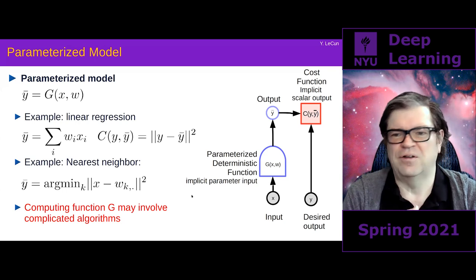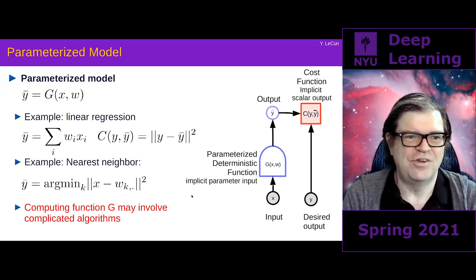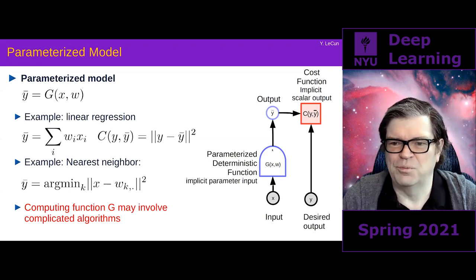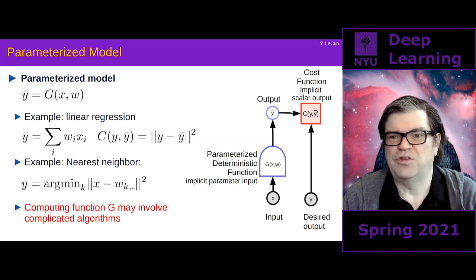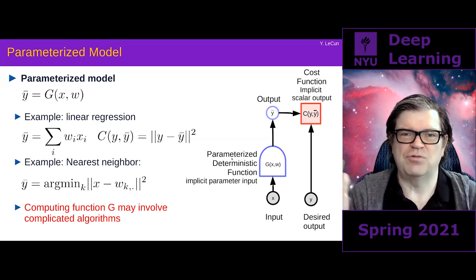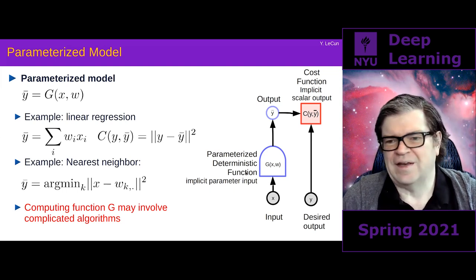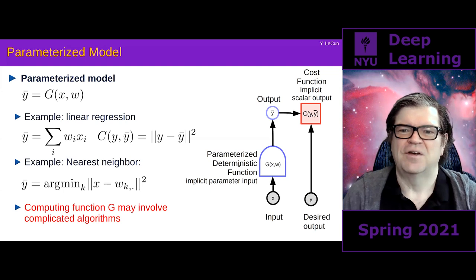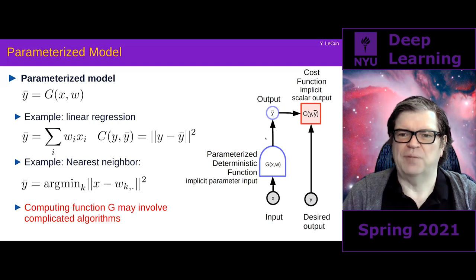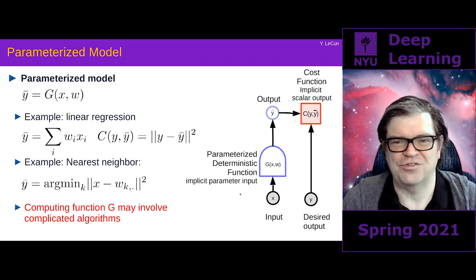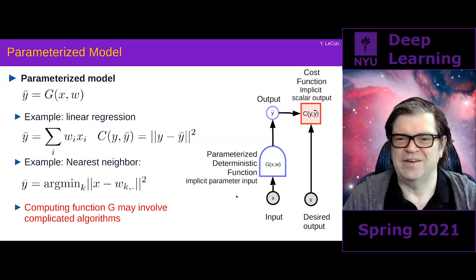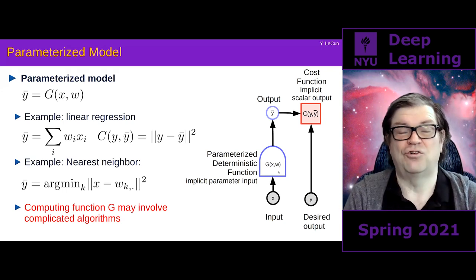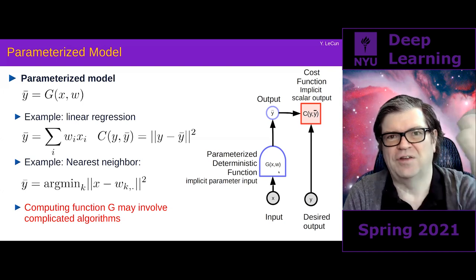We're going to deal with parametrized models. A parametrized model, or learning model, is a parametrized function g of x and w, where x is the input and w is a set of parameters. The output can be a vector, matrix, tensor, or scalar — generally multidimensional. Those parameters w are the knobs we're going to adjust during training, and they basically determine the input-output relationship between input x and the predicted output y-bar.